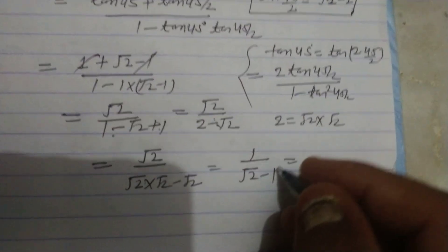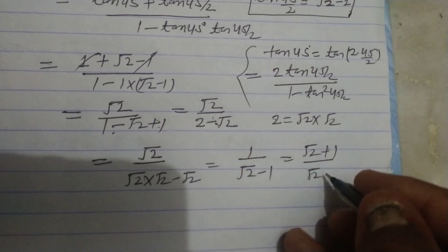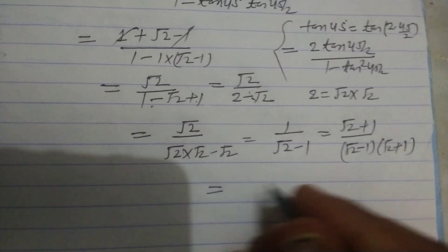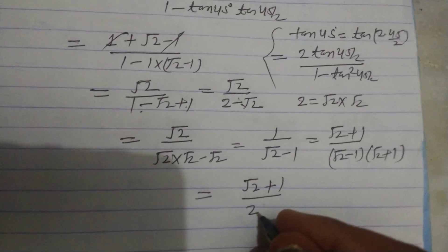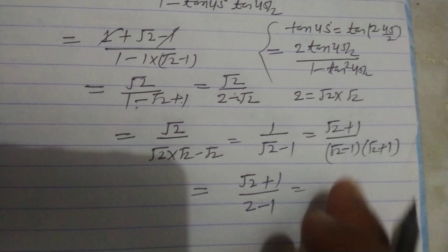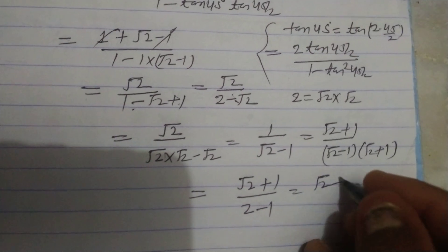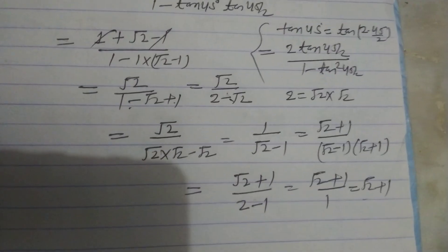Now multiplying by the conjugate of √2 - 1, which is √2 + 1, this becomes (√2 + 1) over (√2 - 1)(√2 + 1). Finally we get √2 + 1 over 2 - 1, which is √2 + 1 upon 1. Answer is √2 + 1.